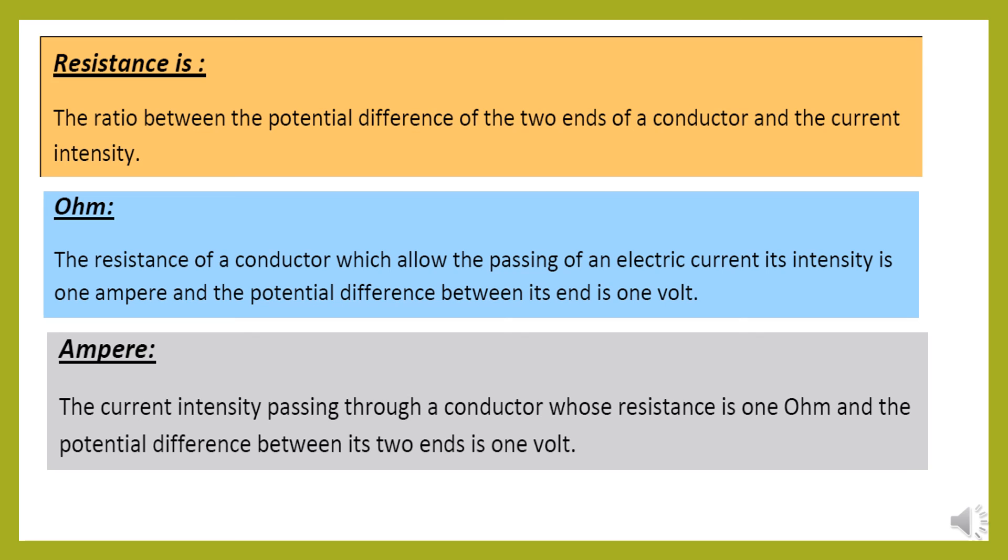Resistance is the ratio between potential difference and current intensity. Ohm. Ohm is the measuring unit of resistance. So we have the resistance of a conductor which allows passing of an electric current, its intensity one ampere and the potential difference between its ends is one volt.